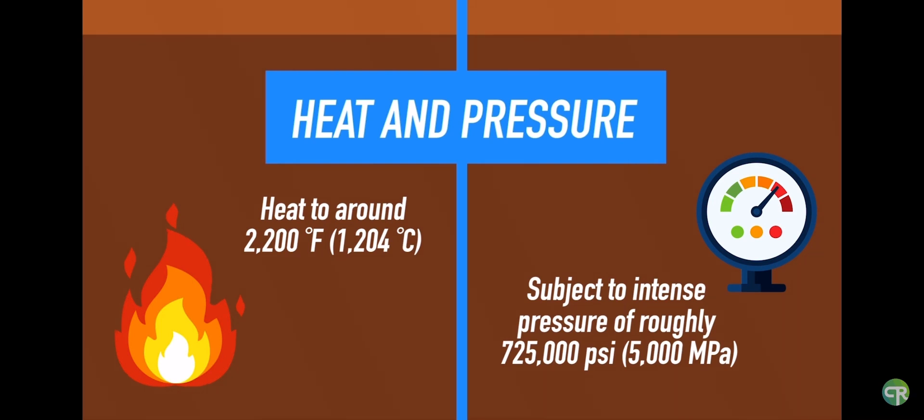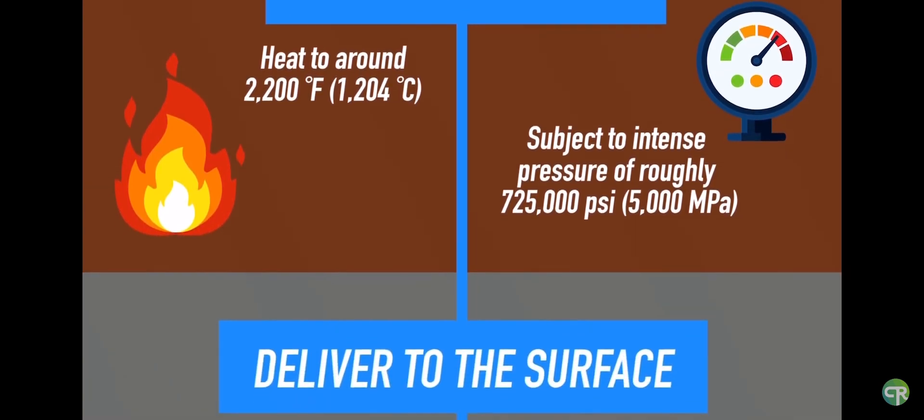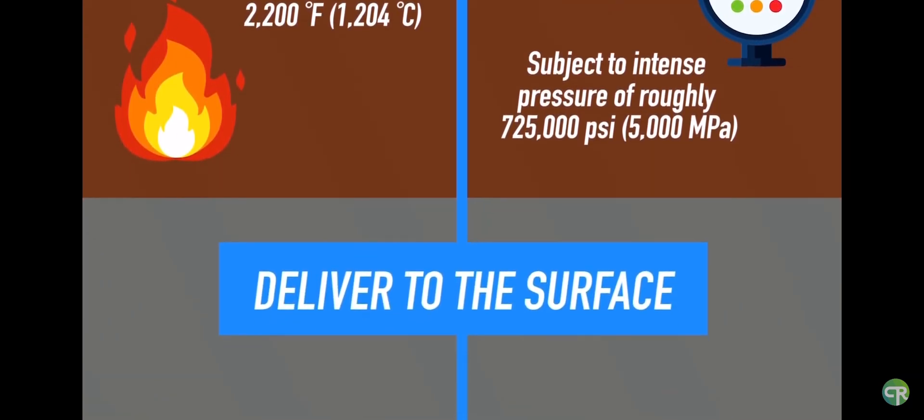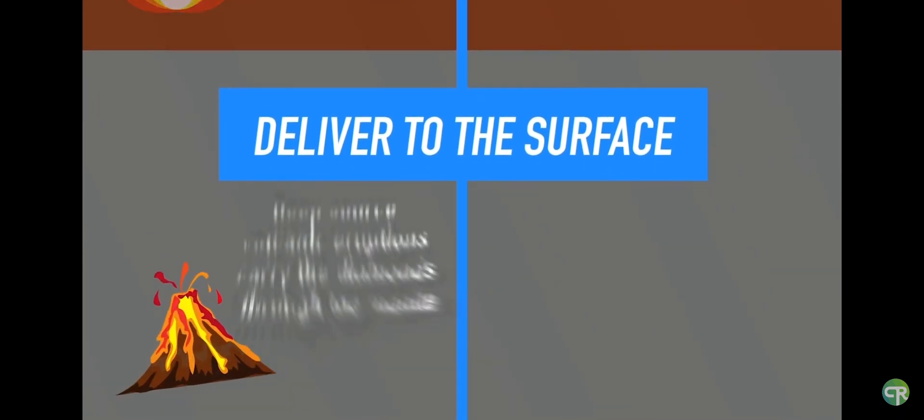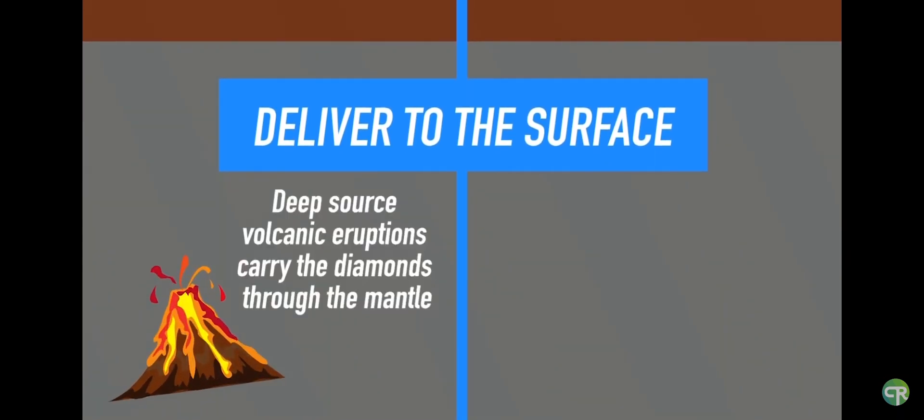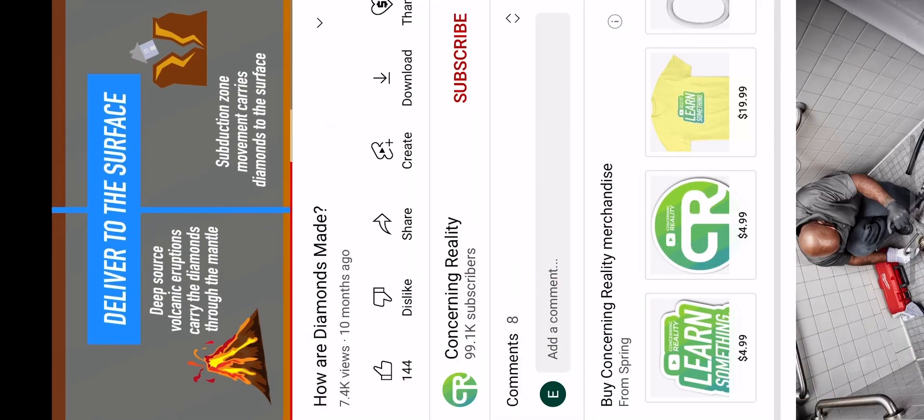At this point, the diamonds have been made, but now they need to be delivered to the surface so that we can find them. Since these diamonds are so deep under the crust of the Earth, it requires deep-source volcanic eruptions to carry the diamonds up through the mantle and the plates to the surface, or a subduction zone needs to occur to carry the diamonds to the surface. Through these different ways, we can find diamonds close to the surface.